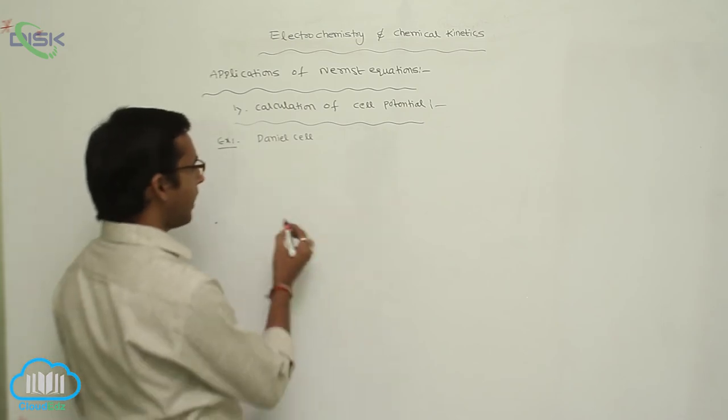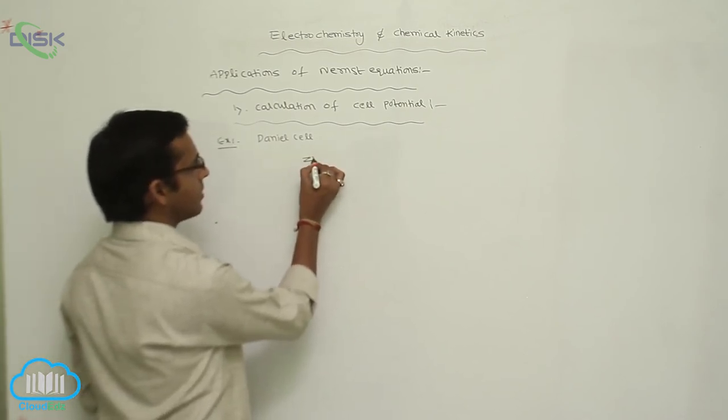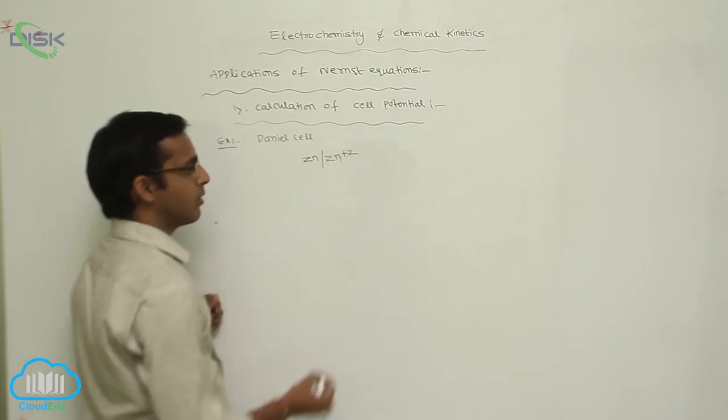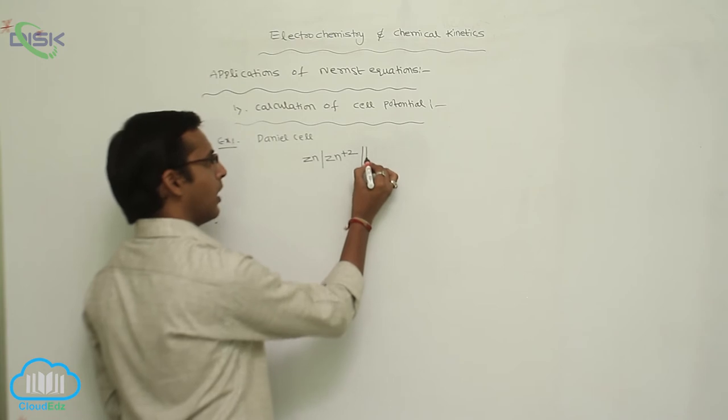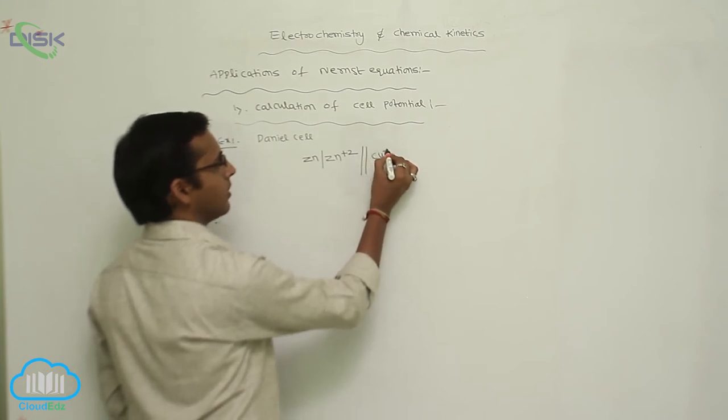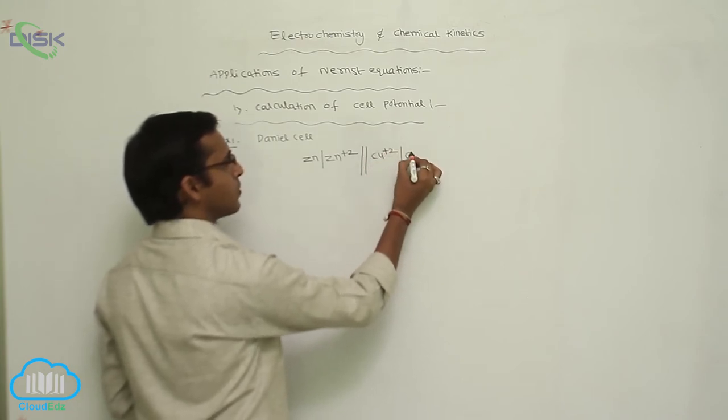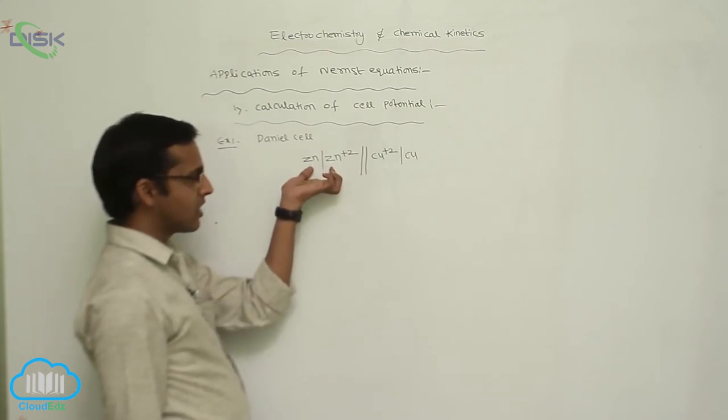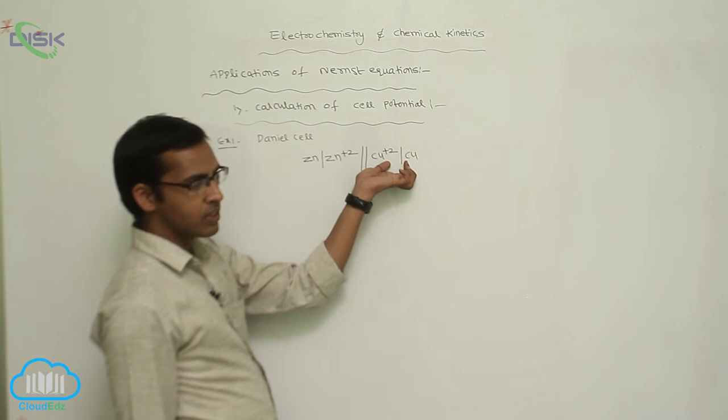The Daniel cell reaction is Zn with vertical line, Zn plus 2, double vertical line, Cu plus 2, and Cu. Your zinc rod acts as an oxidizing agent, and this is your reducing agent for cell potential.